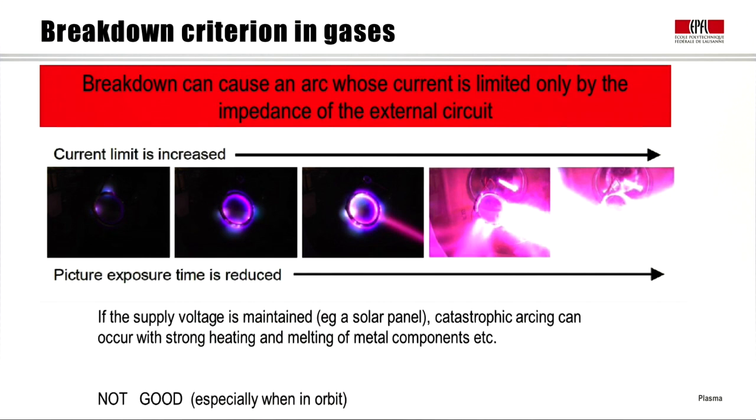When breakdown occurs between parallel conducting electrodes, this can cause an arc whose current is limited only by the impedance of the external circuit. As we can see in these photographs here, where the current limit in the external circuit was increased between each different experiment. So, as the current limit becomes very high, we can get catastrophic melting of components and complete destruction of the electrodes. So, if the supply is maintained, for example by a solar panel, then catastrophic arcing could destroy a slip ring in a satellite. This is not good, especially in orbit, where the possibility of repair is very small.